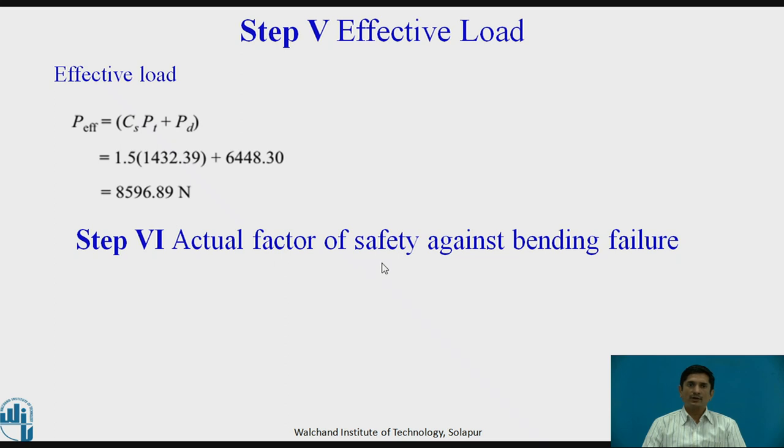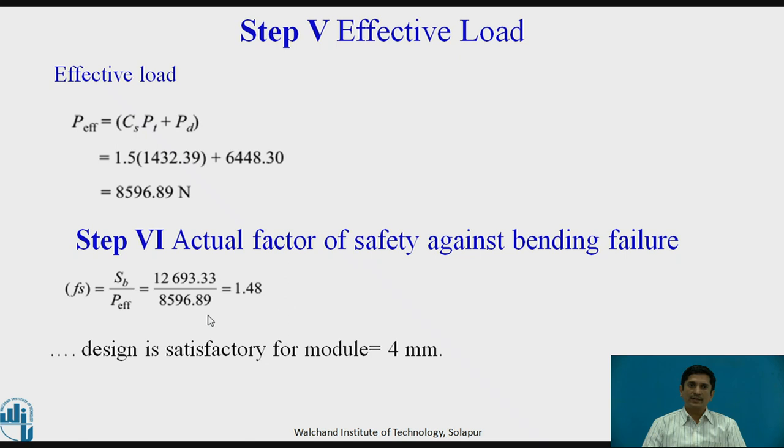The actual factor of safety against bending failure. Now we know the exact value of P effective. We need to use this value, exact P effective, and the beam strength. We can get factor of safety equals 1.48. We can conclude that the design is satisfactory for module equals 4 mm.